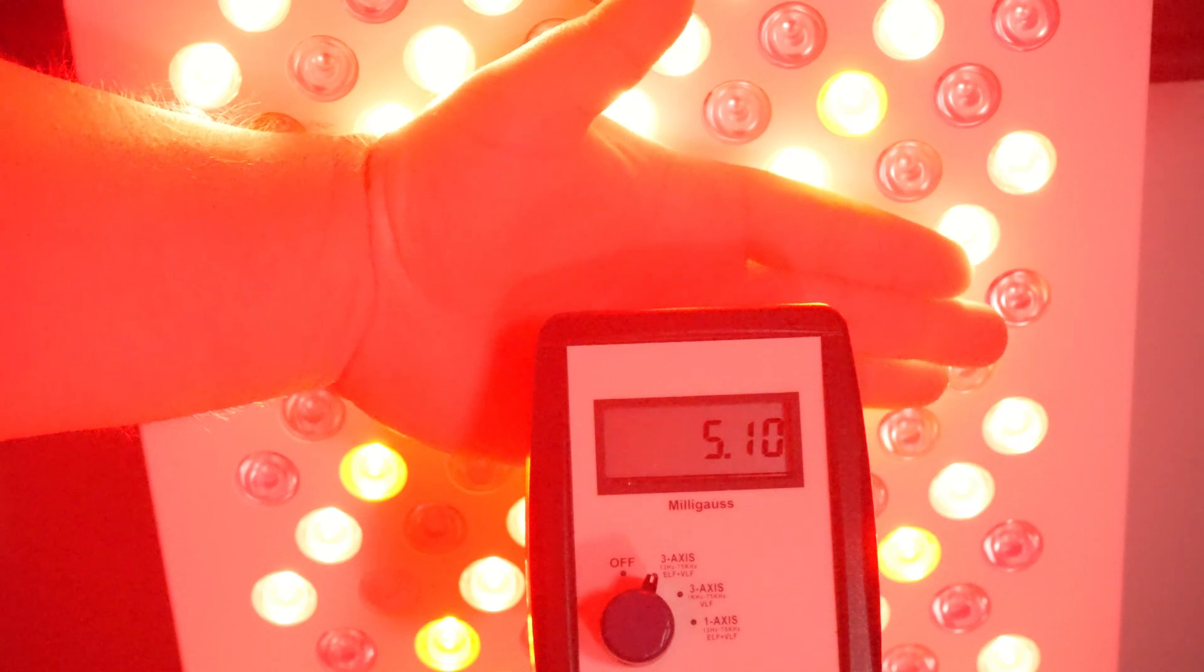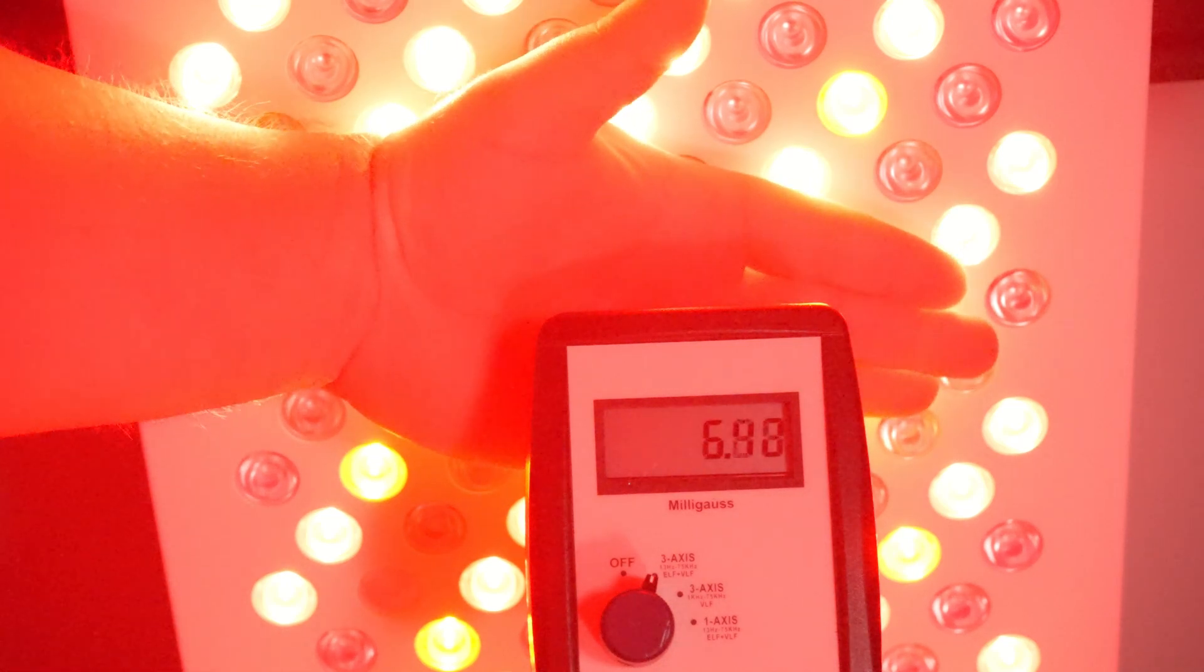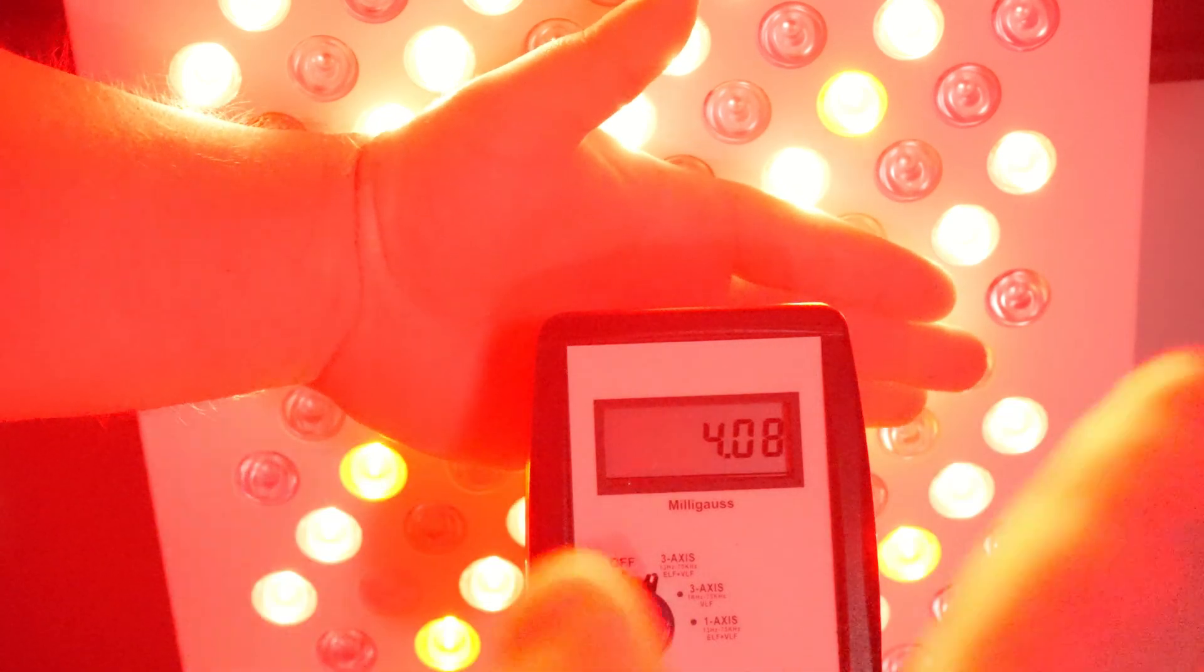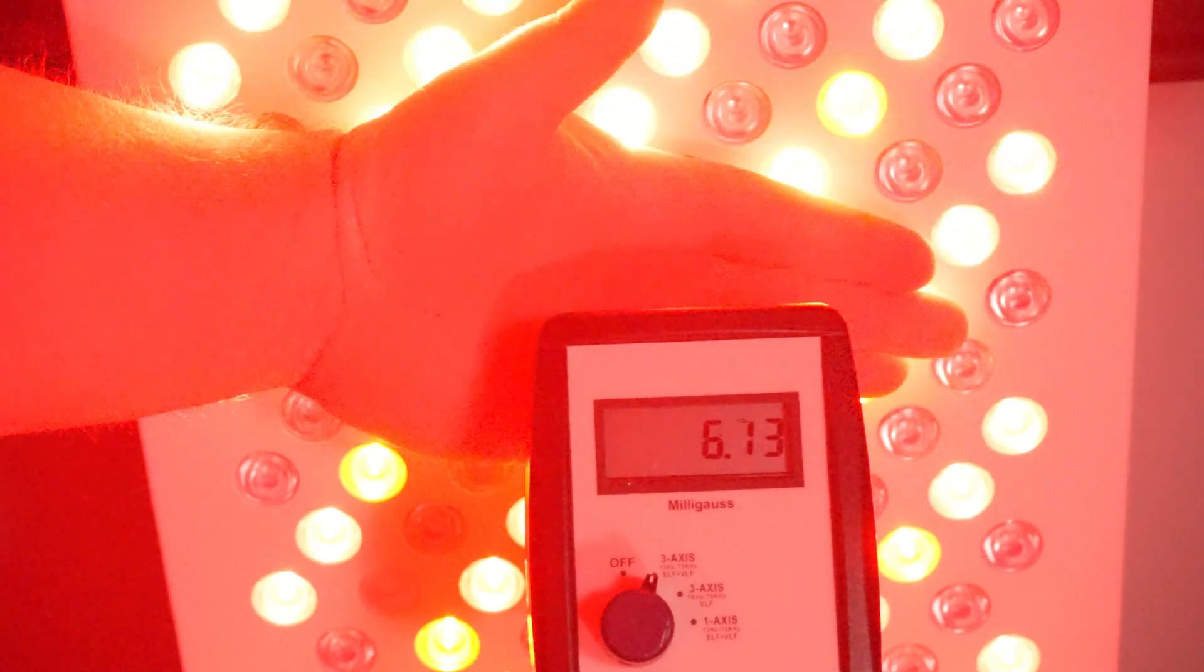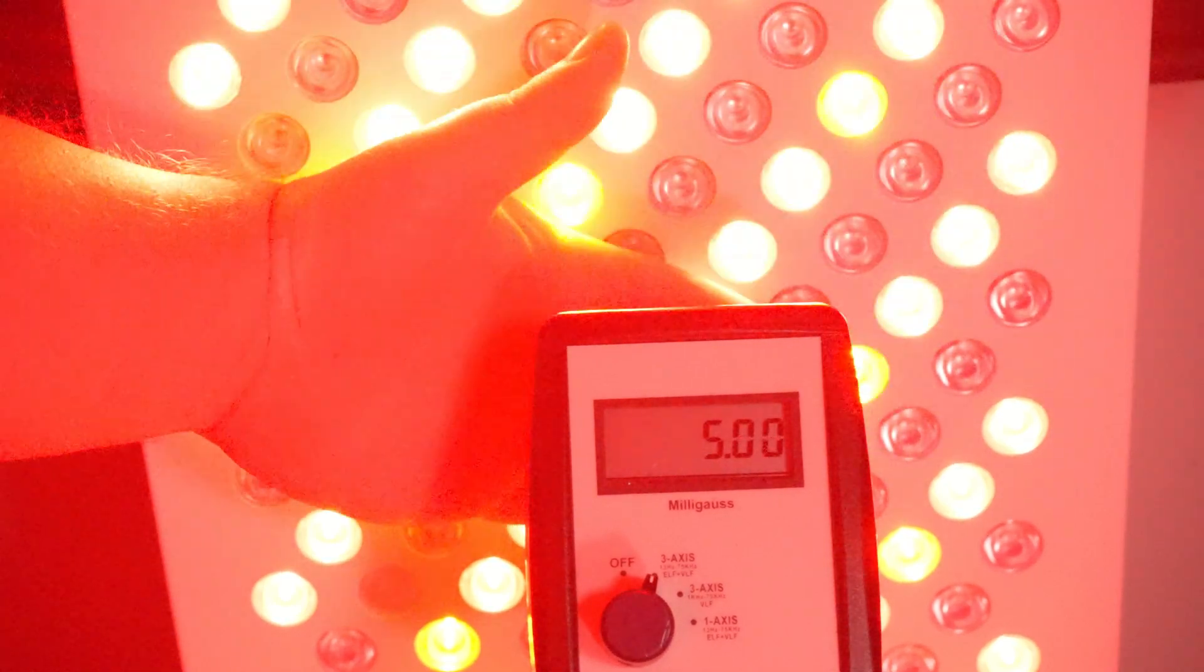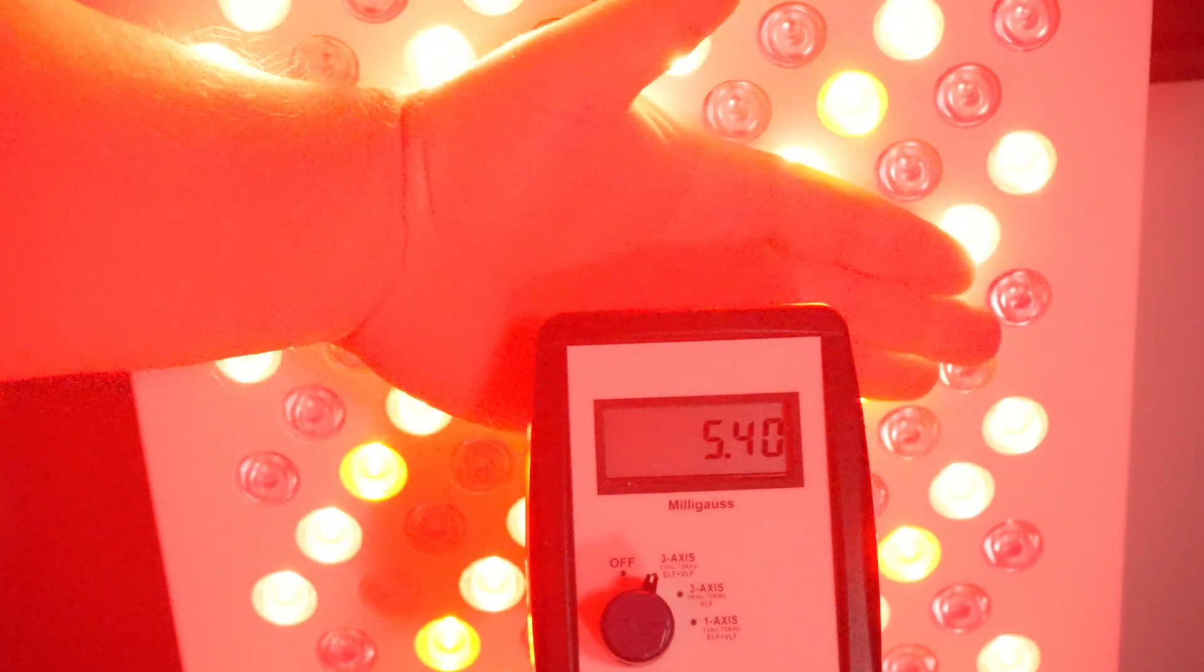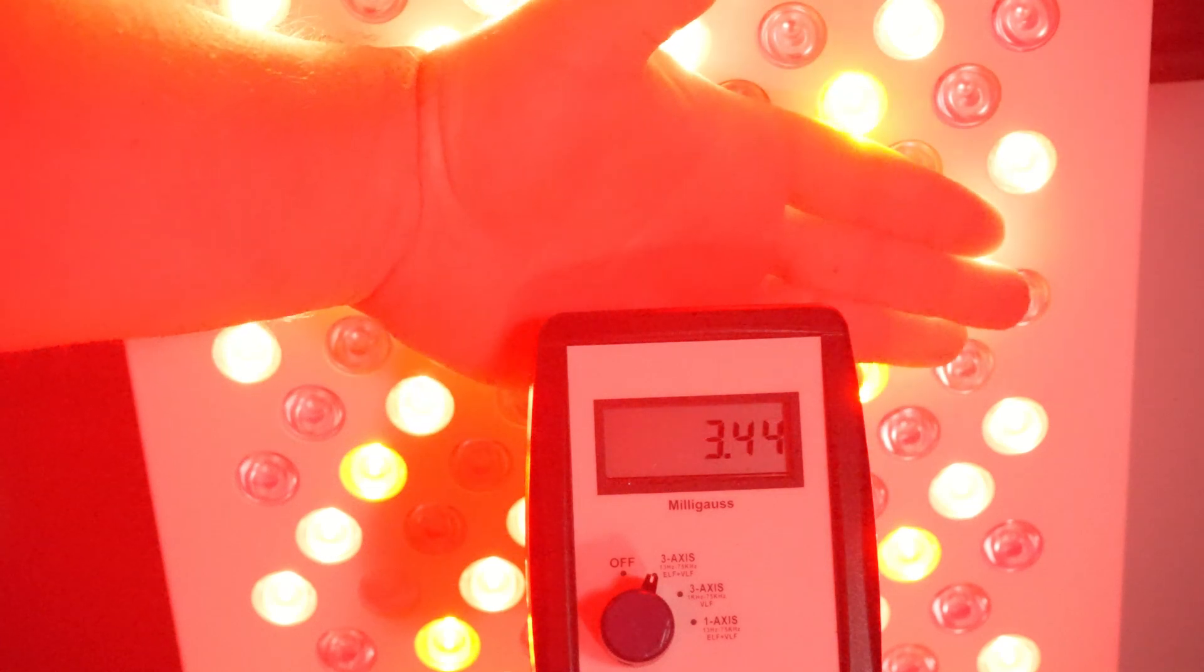There is some variability. Maybe there's some sort of process cycling inside the panel on the power drivers or the fans. So it is up and down in that range around four to six milligauss. But my hand has not caused any change. I haven't changed the distance or anything else, but my hand is not blocking the magnetic field.